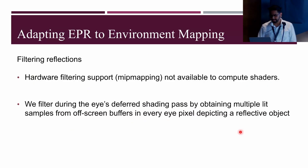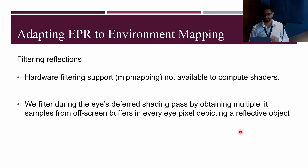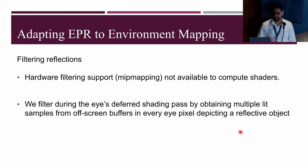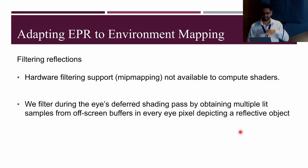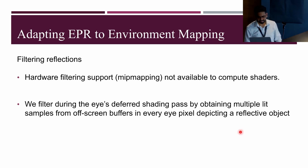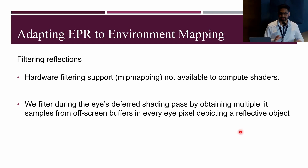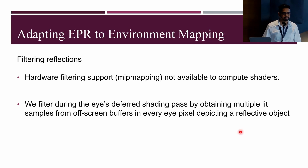Our filtering approach assumes the normal under the eye pixel changes regularly and the material is unchanging. When generating the G-buffer for the eye, we store gradient information with each eye pixel. For reflective objects, we use gradient-adjusted normals to calculate reflection vectors for supersampled eye pixels. We believe this approach may be more accurate than MIP mapping, since it customizes sampling to each eye pixel rather than approximating over an image pyramid.